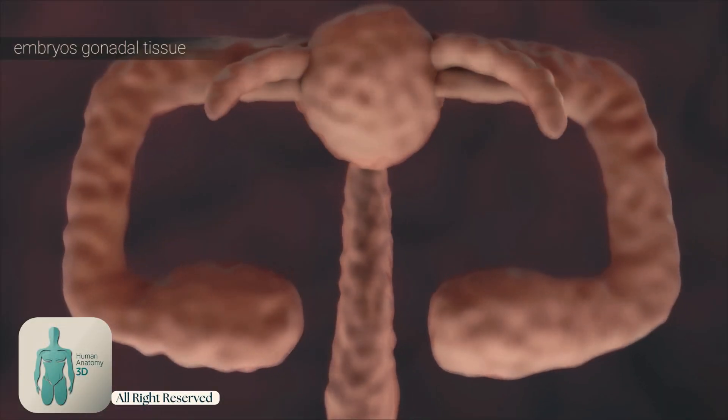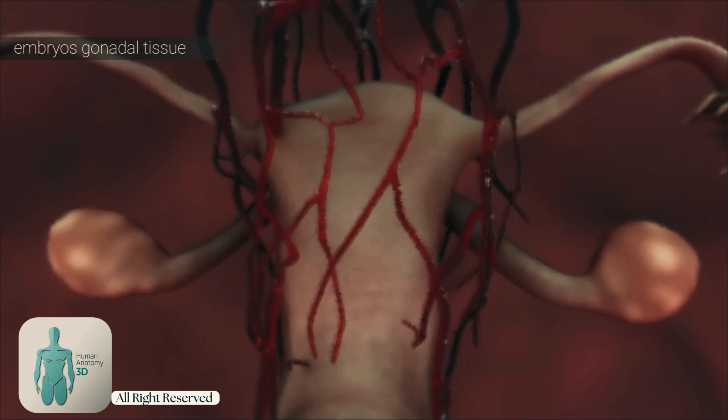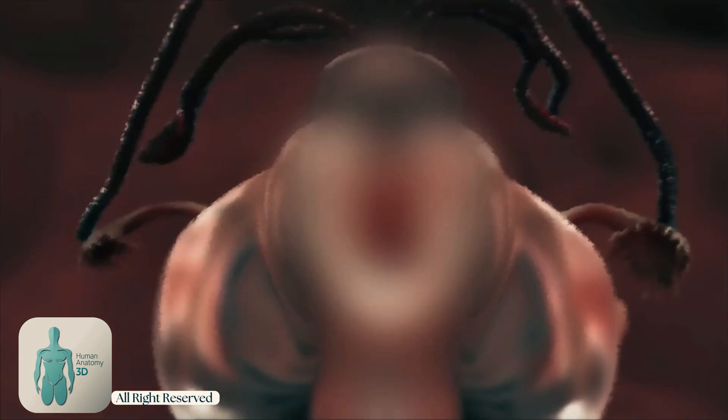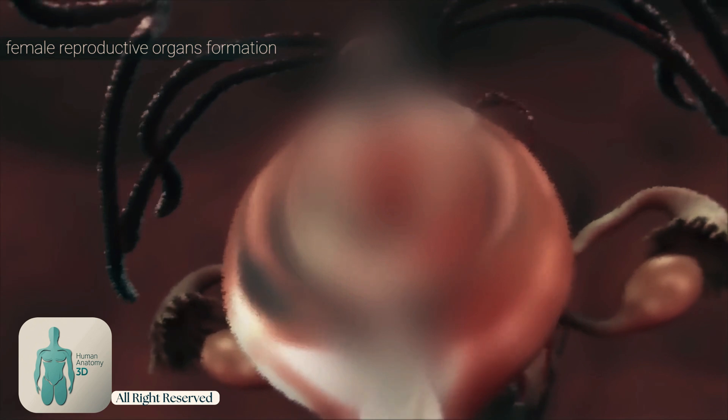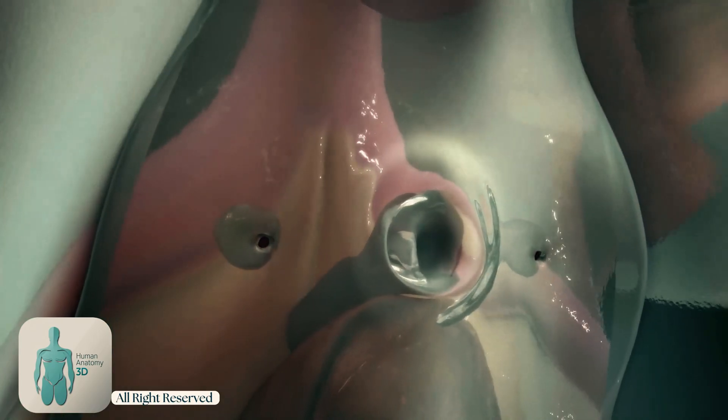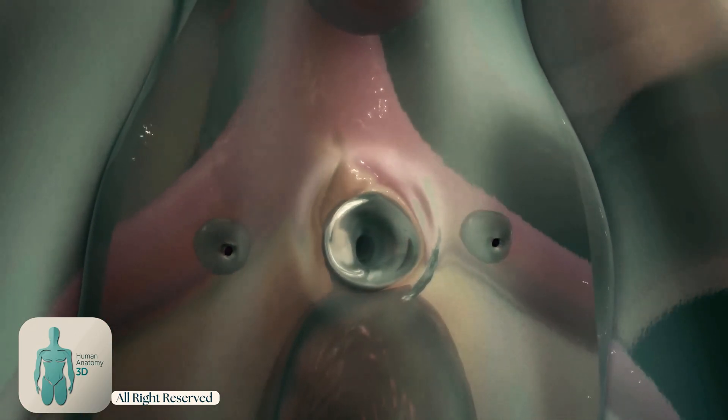If the embryo does not have a Y chromosome, indicating a female, the gonadal tissue develops into ovaries. The absence of certain hormones leads to the development of female reproductive structures.